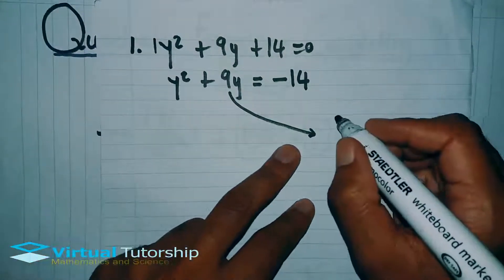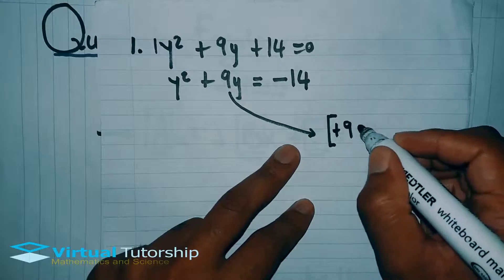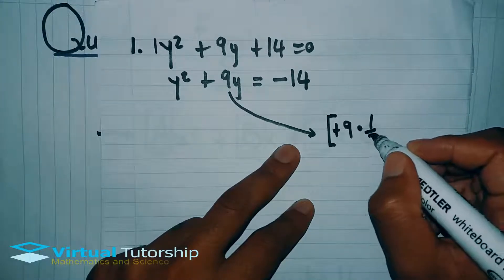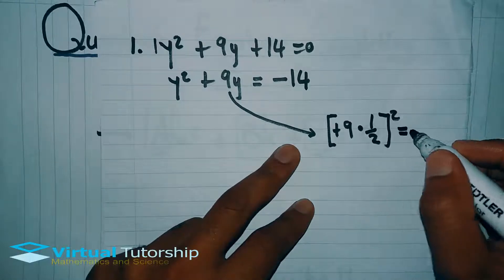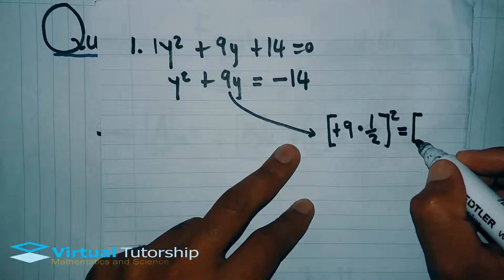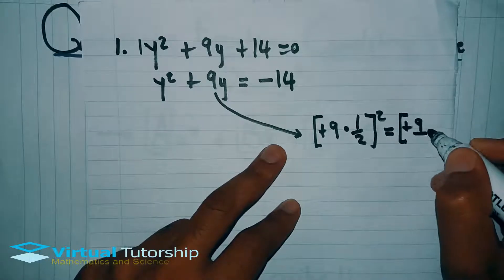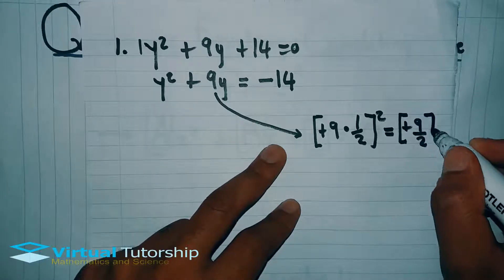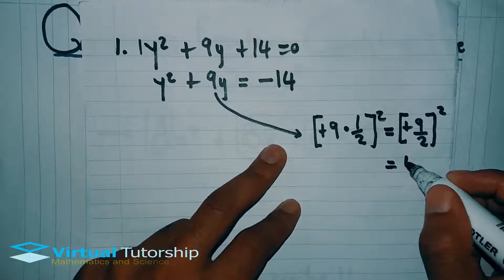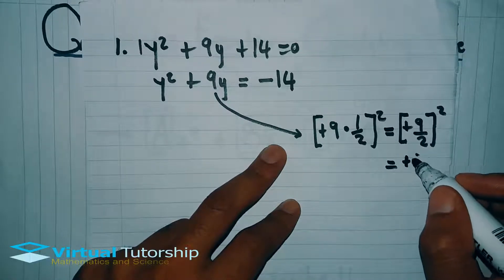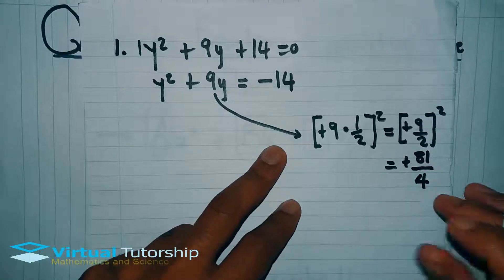We take the b value — always take the b value, which in this case is 9. You multiply it by half, then you square everything. So 9 over 2, all squared, equals positive 81 over 4.